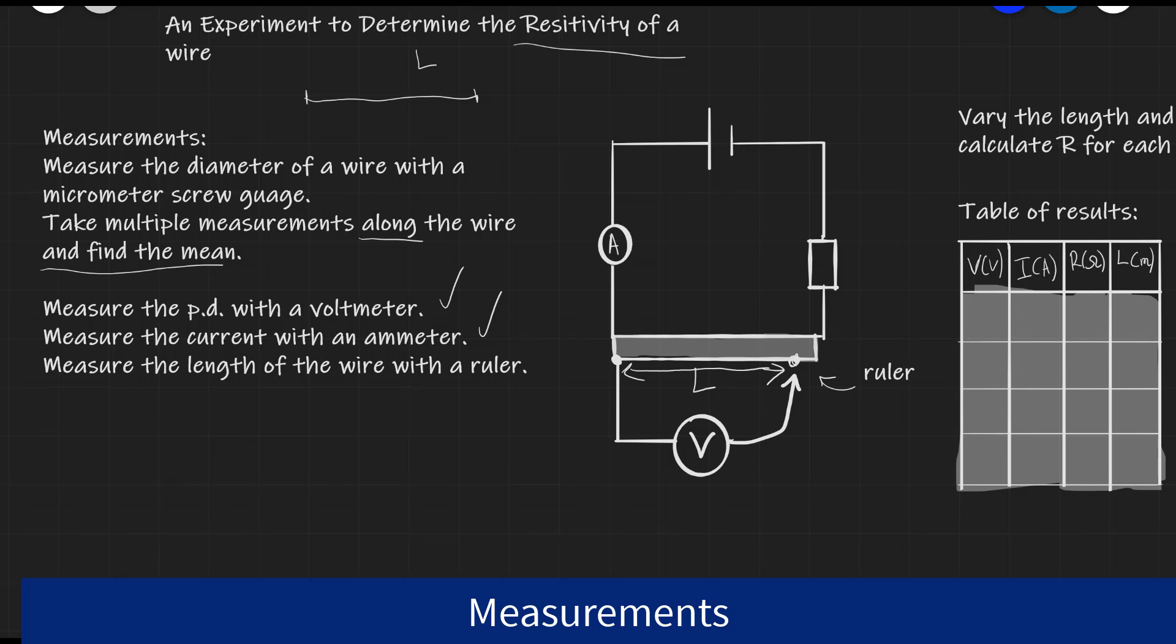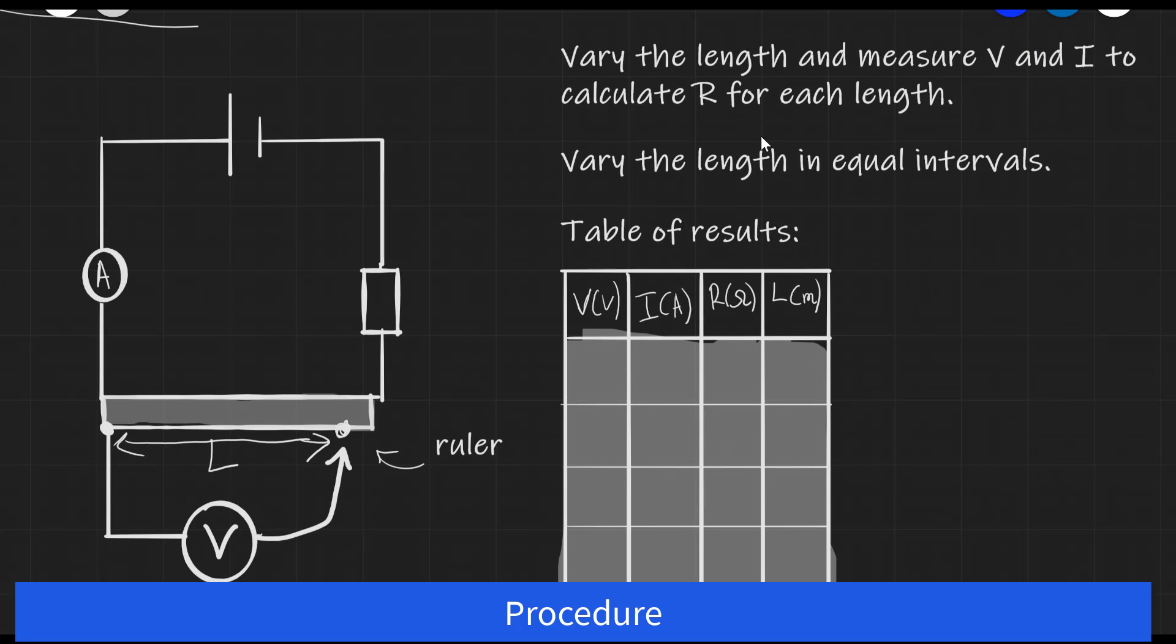Let's have a look at our procedure. We mentioned we're going to be varying the length of the wire by adjusting the crocodile clips and measuring the voltage of a different length of wire. Then for each length, we're going to be measuring the voltage V and the current I.